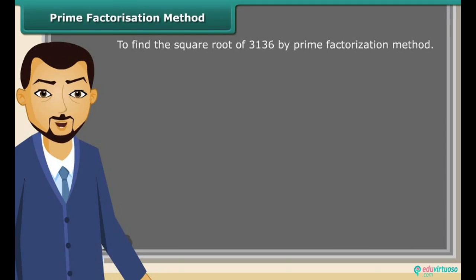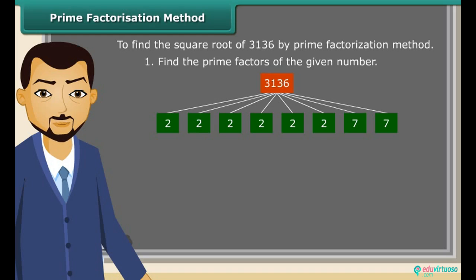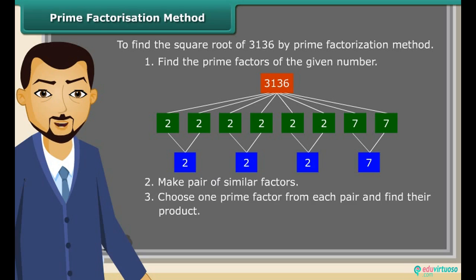Now we will find the square root by prime factorization method. First, find the prime factors of the given number. Make pairs of similar factors. Then choose one prime factor from each pair and find their product. The product thus obtained is the square root of the given number.